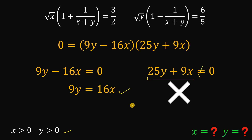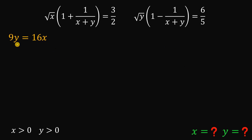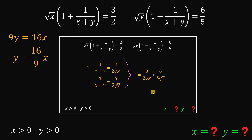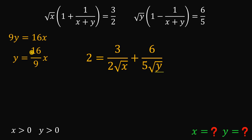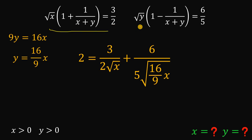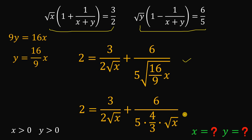We can now solve for y in terms of x. Dividing both sides by 9 gives y equals 16 over 9 times x. Recalling our earlier equation: 2 equals 3 over 2 times square root of x plus 6 over 5 times square root of y. We replace y with 16 over 9 times x. The square root of (16 over 9 times x) simplifies to 4 over 3 times square root of x.